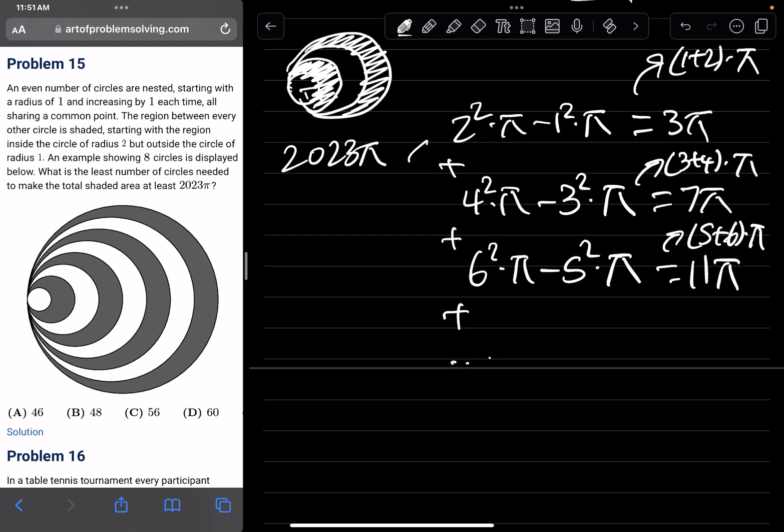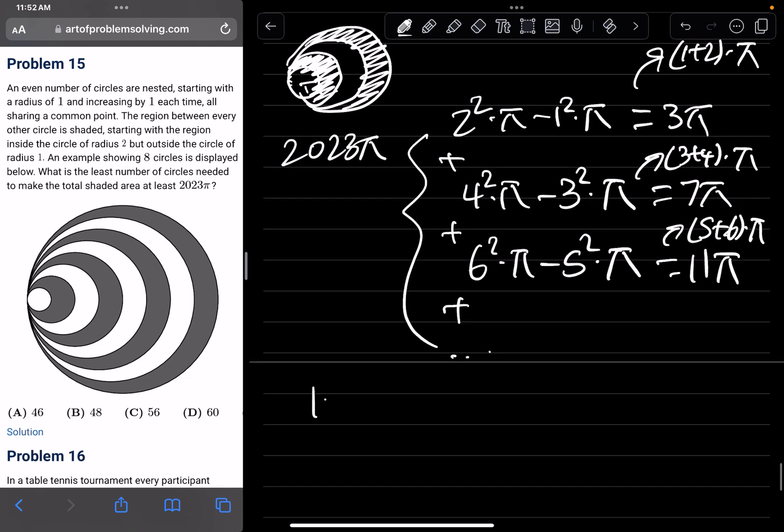As we add up all these shaded areas, it's just going to be 1 + 2 + 3 + 4 + 5 + 6 + ... + n times π.